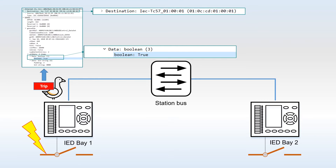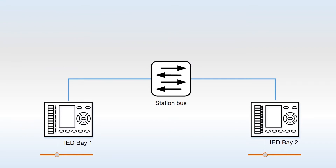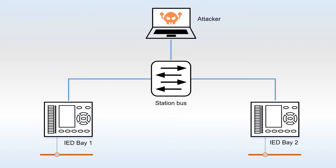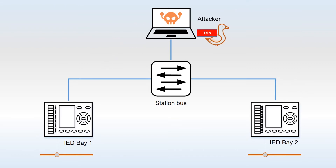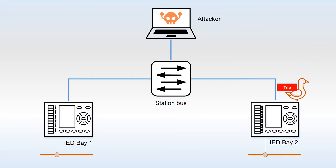There is an additional standard which implies digital signing of GOOSE messages. However, it's not widely adopted yet. Also, for time-critical reasons, GOOSE uses multicast transmission. So it's easy for an attacker to sniff messages, study their contents, and forge a malicious packet that mimics an IED announcement about failure. This is exactly what I did with my attack tool during the demo.